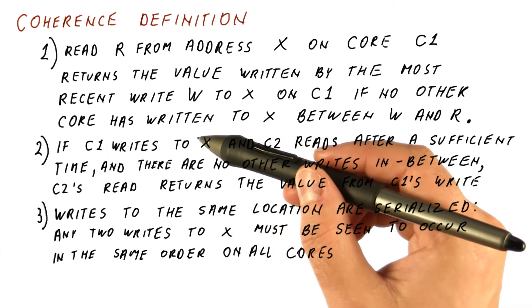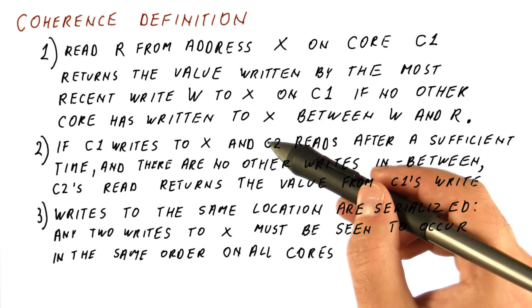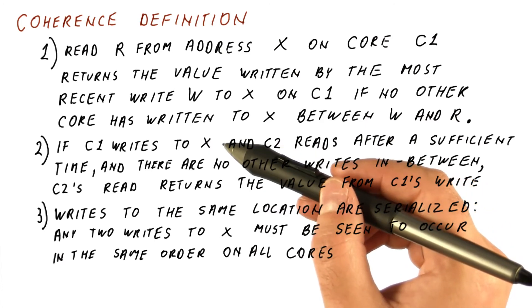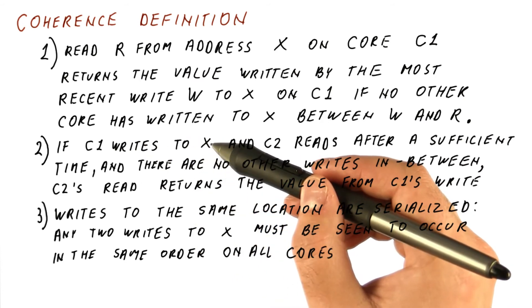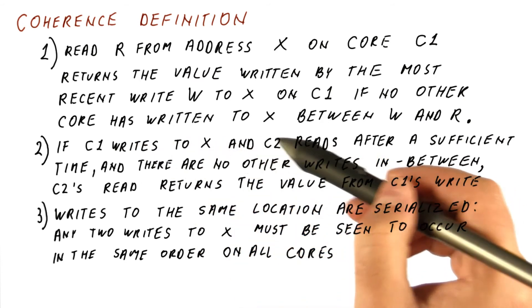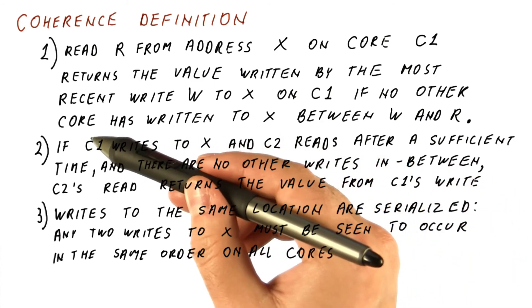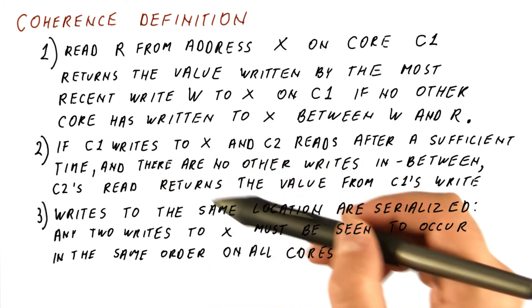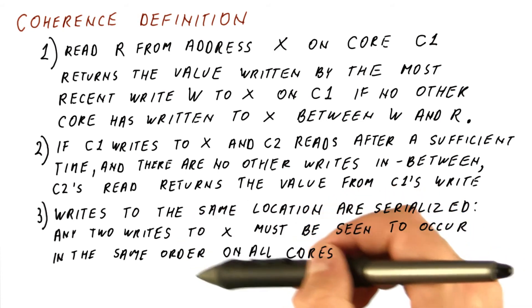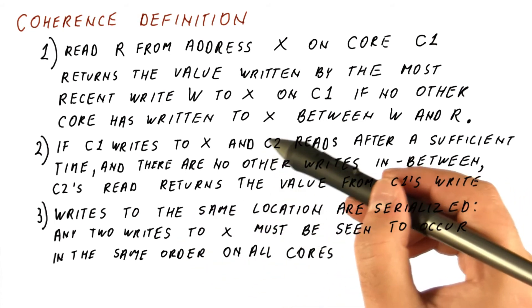Let's say there was one write on c1 and another write on c3. When c2 reads, it's allowed to return after a sufficient time either c1's or c3's value because it's allowed to interpret this order as either c1 and then c3 wrote or the other way around.